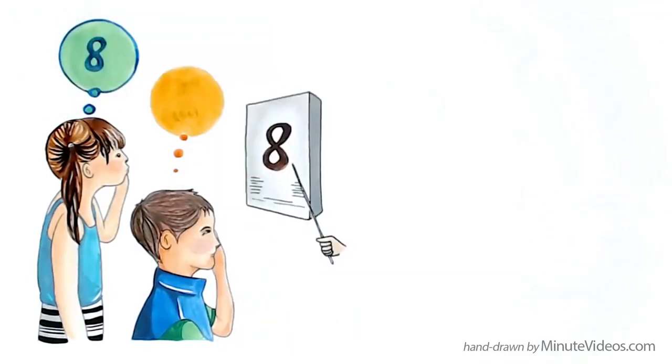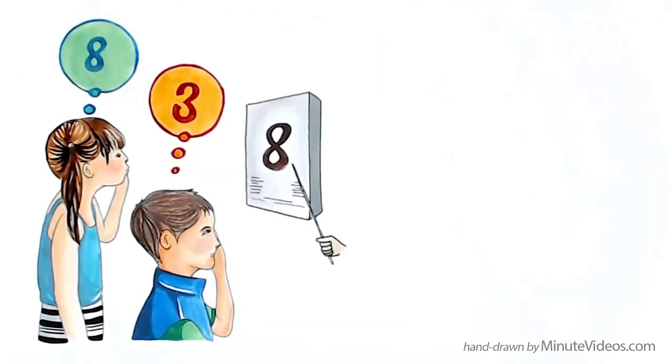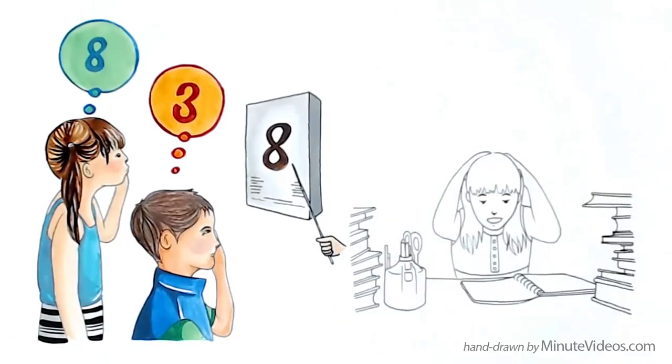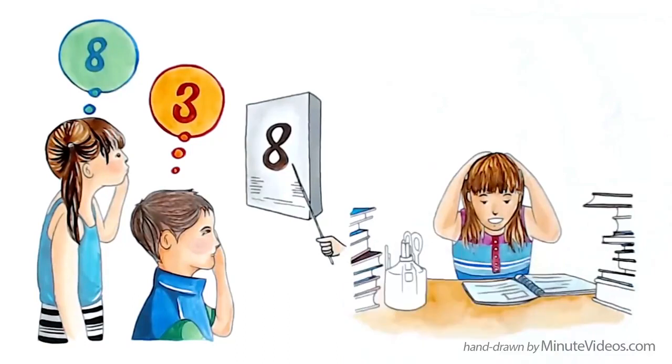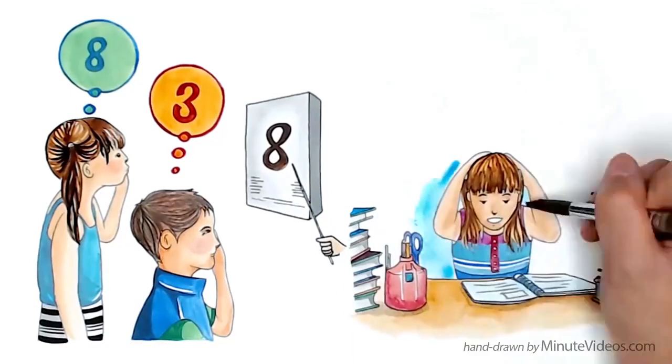Where one kid sees an eight, the other might see a three. Too often, teachers and adults also don't know the signs of a child's impaired sight and wrongly label them as slow or learning disabled.